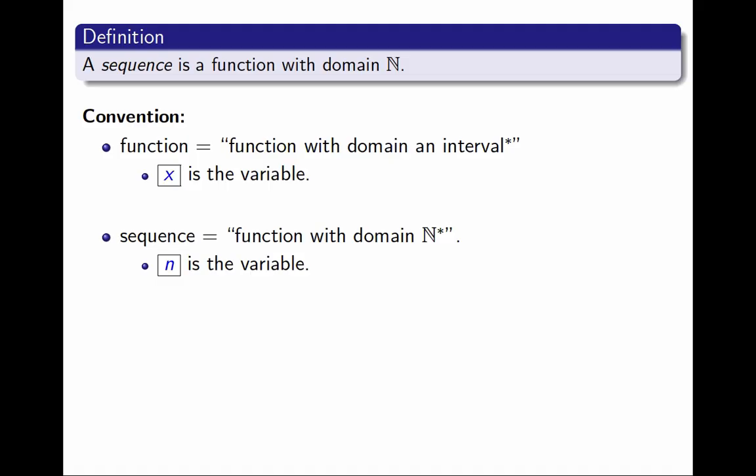If I use x as the name of the variable for a function and the function is called f, then the value of the function at x is f in parentheses x. But the value of the sequence at n we'll often write a sub n as a sub index, if a is the name of a sequence. Again, there is no good reason for this. We could use indices for functions and parentheses for sequences, but we often agree to do it this way.